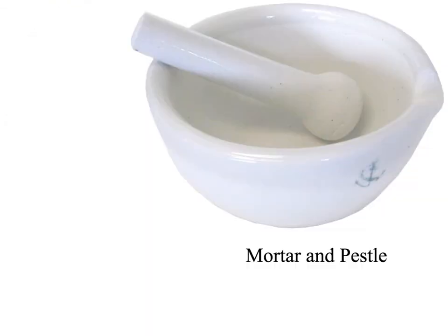This item is called a mortar and pestle. It is used to crush and grind things. You grab the pestle, put whatever you want to grind into the bowl — the mortar — and smash and grind it until it reaches a powder or whatever consistency you're looking for.